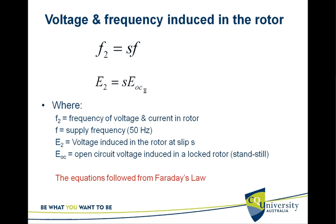F2 is the frequency of voltage and current in the rotor. The frequency of the induced voltage in the rotor does not have the same frequency as the supply — it is slightly less. F2 is the rotor frequency, and F is the supply frequency, 50 Hz in most cases.